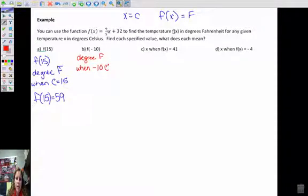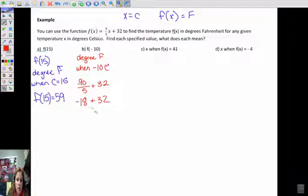Well, let's find out. So that would be negative 10 times 9 would be 90, negative 90, divided by 5, and then we're going to add 32. So that's going to be negative 18 plus 32. So that's going to be 32 minus 18 is 14 degrees. So f of negative 10 is 14 degrees Fahrenheit.